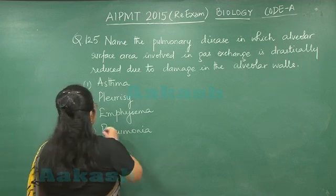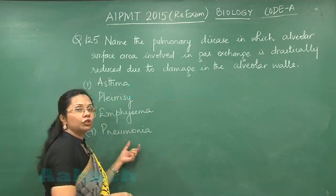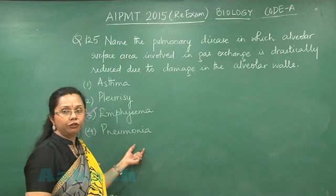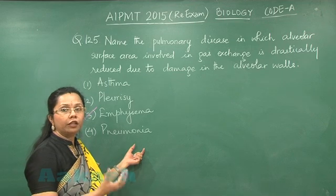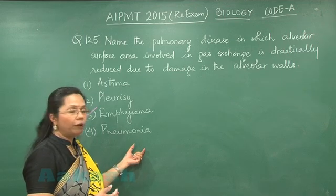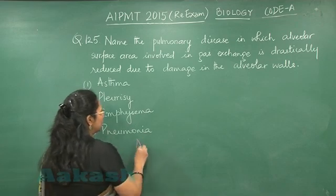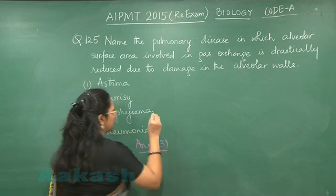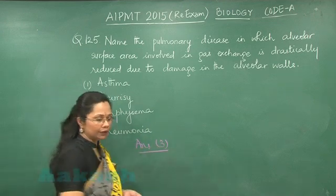So, the disease is emphysema, which is treated by alpha-1 antitrypsin, which nullifies the effect of the proteases secreted by macrophages. So, the answer is 3, and let us move to the next question, 126.